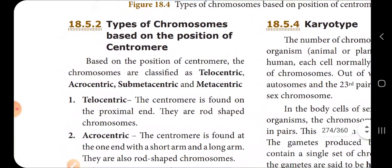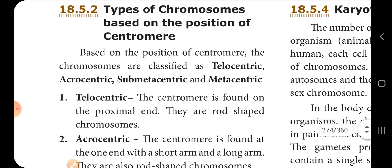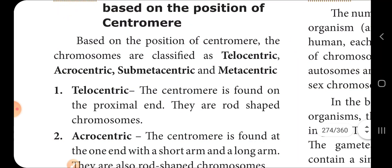Types of chromosomes based on the position of the centromere. First type: the centromere is found at the proximal end. These are rod-shaped chromosomes.